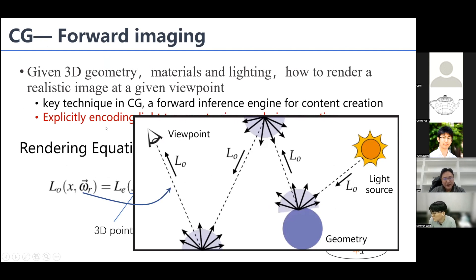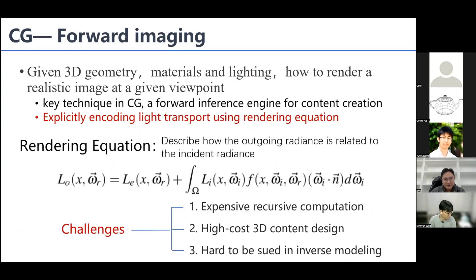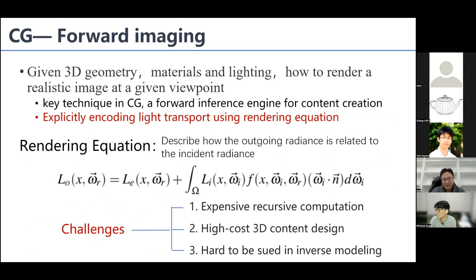Rendering technique can be viewed as a forward inference engine. After we change the geometry, materials, or light source position, we can use the rendering engine to render a new image and infer how geometry changes influence image changes. However, the forward rendering process has some technical challenges. It is expensive to compute since it needs recursive computation to render global illumination, and it is also very expensive to design high quality 3D content.